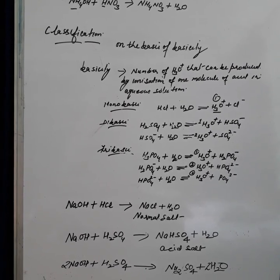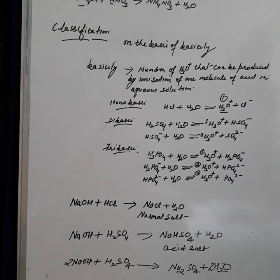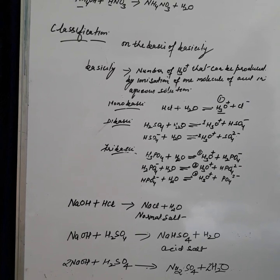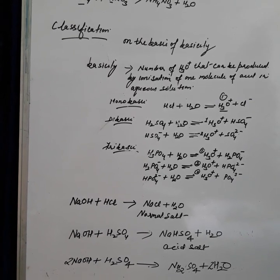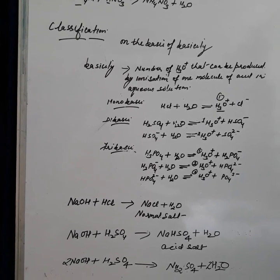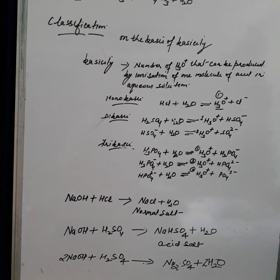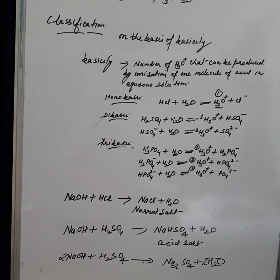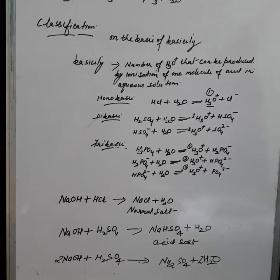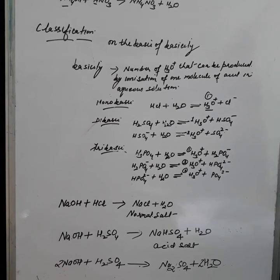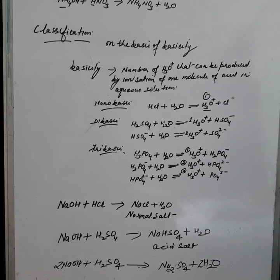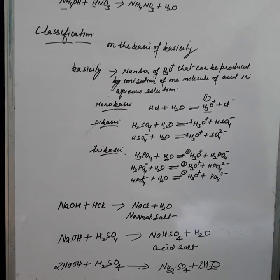Another example is acetic acid. Acetic acid contains four hydrogen atoms, but only one is replaceable. So acetic acid dissolves in water to form only one hydronium ion plus acetate ion. Therefore, acetic acid is also a monobasic acid, even though it contains four hydrogen atoms.